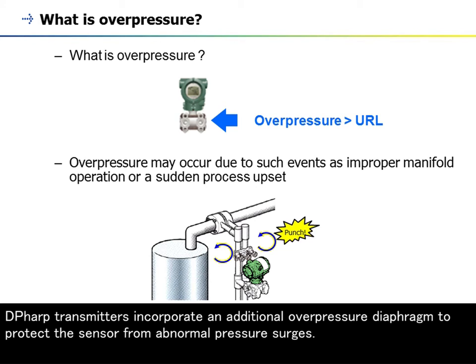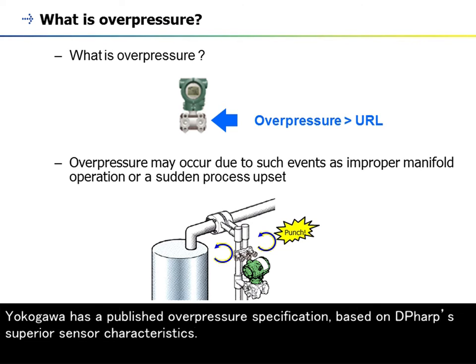DP-HARP transmitters incorporate an additional overpressure diaphragm to protect the sensor from abnormal pressure surges. Yokogawa has a published overpressure specification based on DP-HARP's superior sensor characteristics.